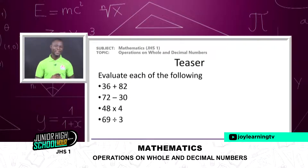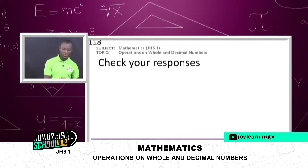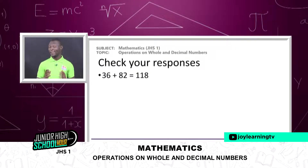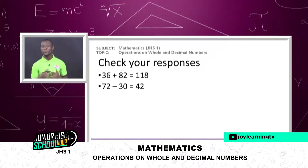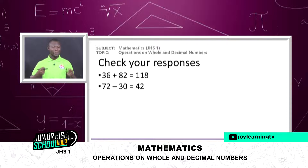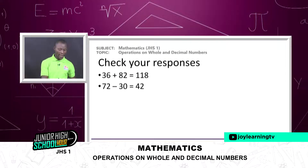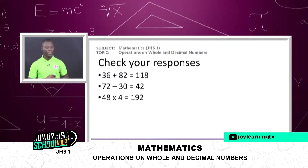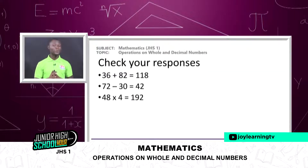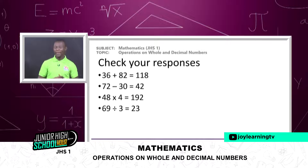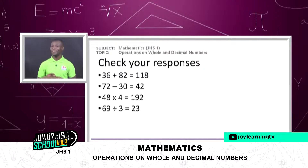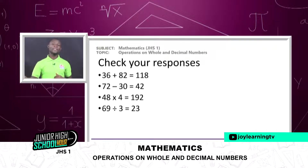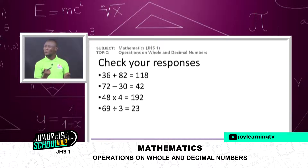Let's look at the responses. The sum of 36 plus 82 gives us 118. The subtraction 72 minus 30 gives us 42. The multiplication 48 times 4 gives 192. And the division 69 divided by 3 gives us 23. Congratulations if you got them all right! If you did not, don't worry — we are going to go through some processes on these operations so you'll know how to deal with them.